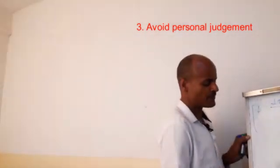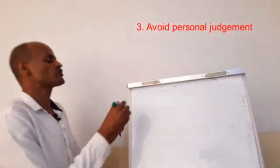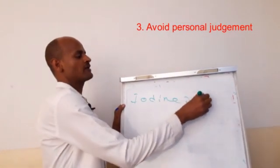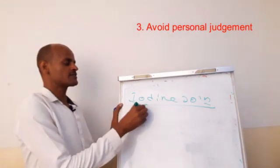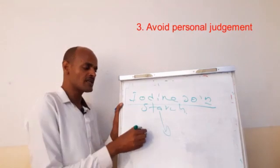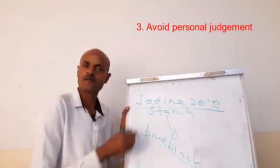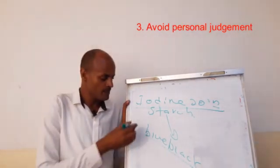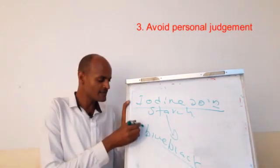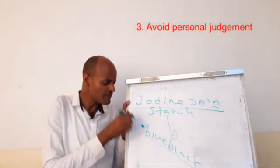In order to check the presence of starch in certain food stuff, we add iodine solution. The iodine solution reacts with starch. If starch is present, when you add iodine solution, there is a blue-black color change. The blue-black color is the expected result.